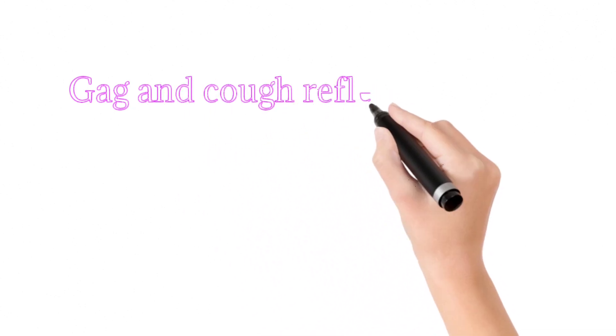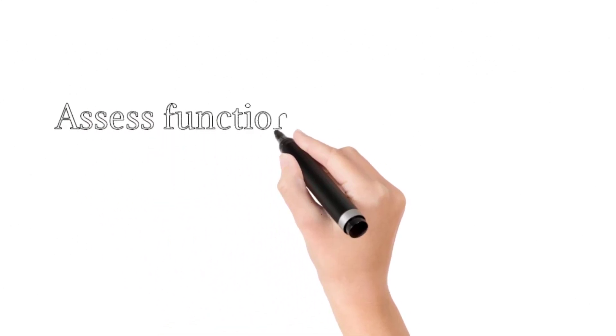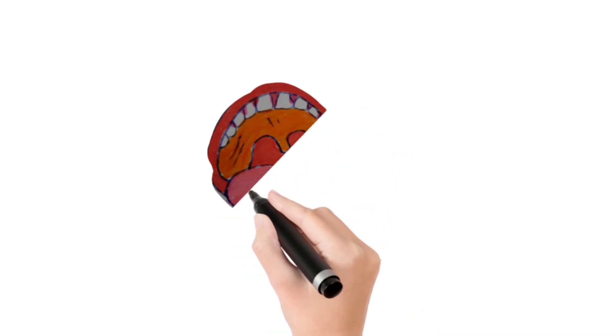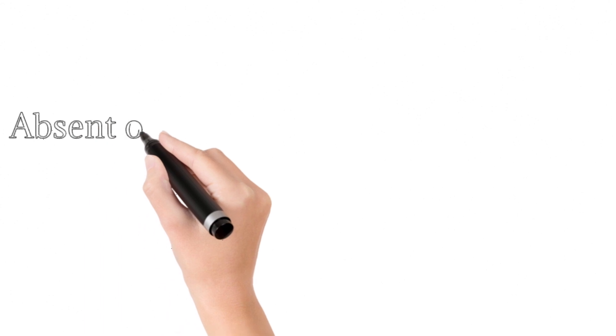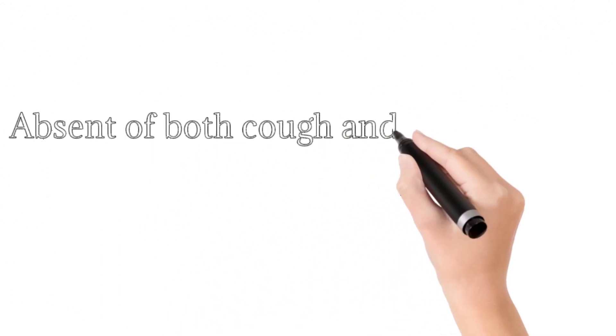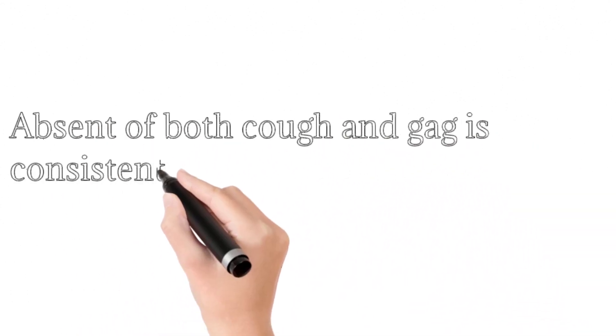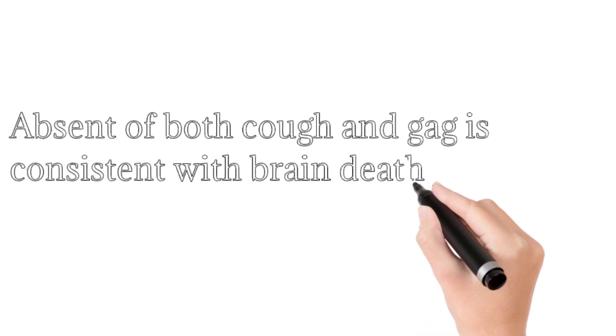Gag and cough reflex. Here we touch the posterior part of the pharynx and see the response. We assess the function of nine and ten cranial nerve. Absence of both gag and cough reflex is consistent with brain death.